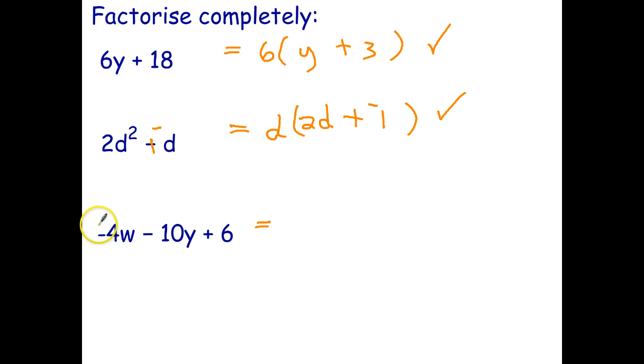And the last one. We're looking at the three terms. We've got a negative 4, 10, and 6. So 4 is not a factor of 10, but 2 is a common factor. So I'll write out the common factor of 2. None of the letters are common, so 2 is the highest common factor. And I'll put the subtraction and the addition in. 2 times what gives me negative 4w? Well, that's going to be 2 times negative 2w. 2 times what gives me 10y? Well, 2 times 5 is 10, so that's minus 5y. And 2 times what gives me 6? And the answer is 3.